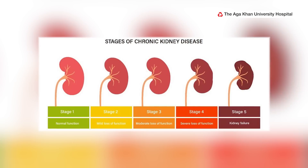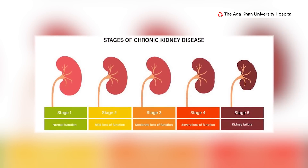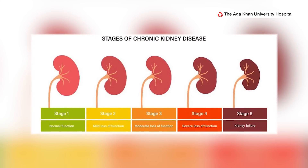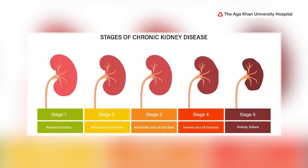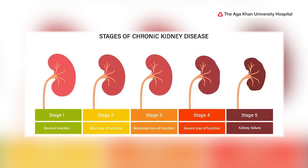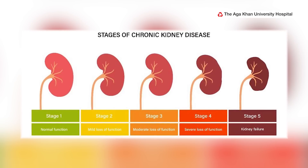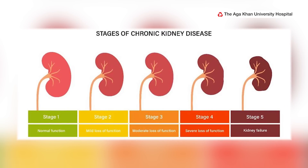While acute kidney injury is mostly reversible, chronic kidney disease is not reversible and exists in various stages. There are stages one to five, and as you progress down the stages, by the time you're at stage five, your kidney function is very little and you need replacement of the kidney function — you need help with the kidney.